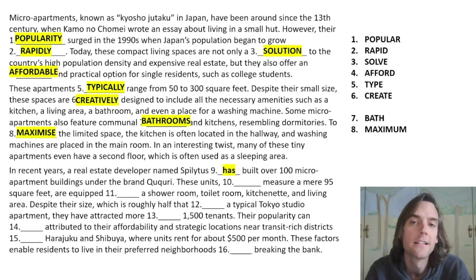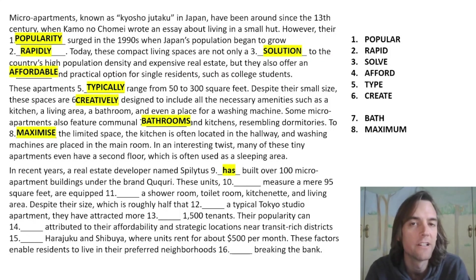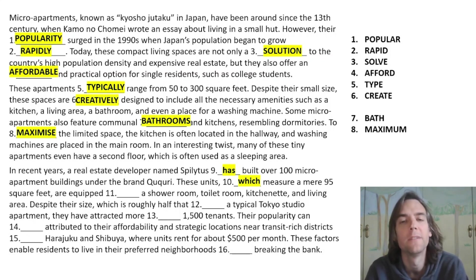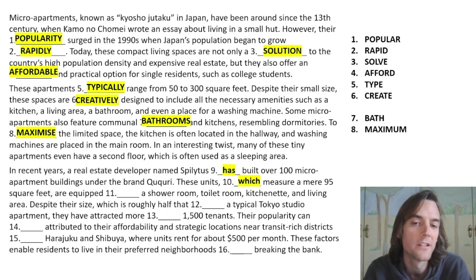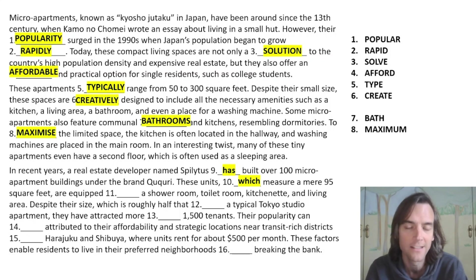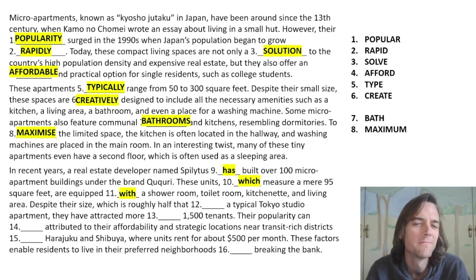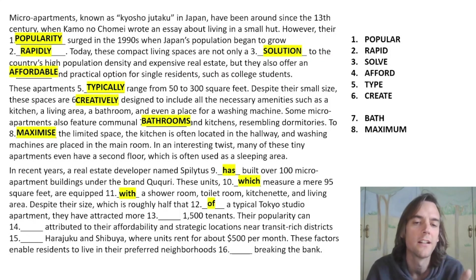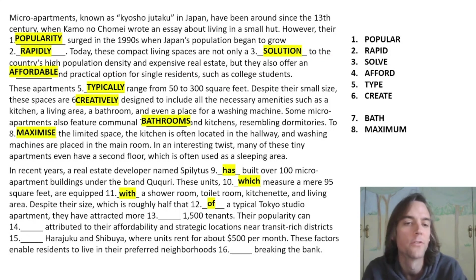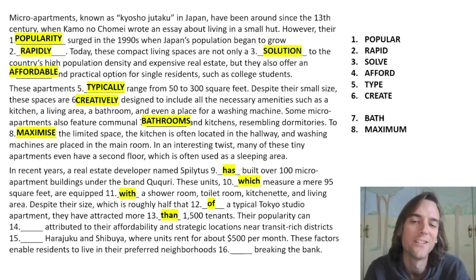For Part Two: 'This company has built many apartments in recent years' — the clue is 'recent years,' so you need the present perfect. 'The units, which measure a mere 95 square feet, must be...' — we use 'which' because it's a non-defining relative clause; we are adding extra information, it has commas, so it must be 'which,' not 'that.' 'Equipped goes with with' — equipped with. Number 12 is 'half that of a typical studio' — their size is half that of a typical studio.